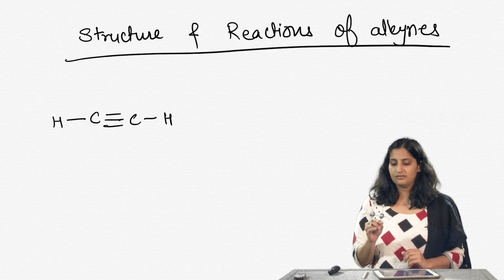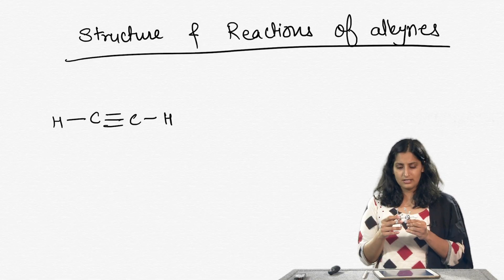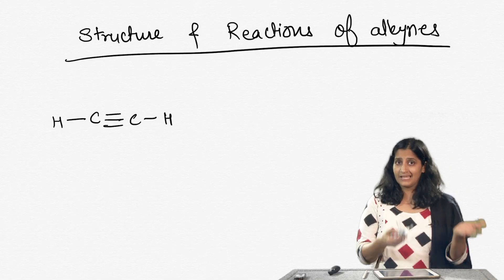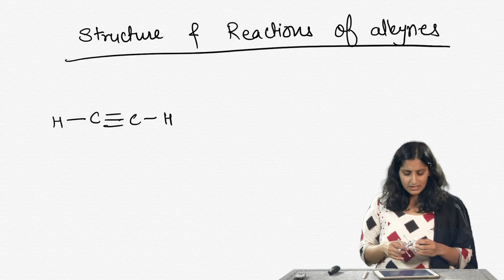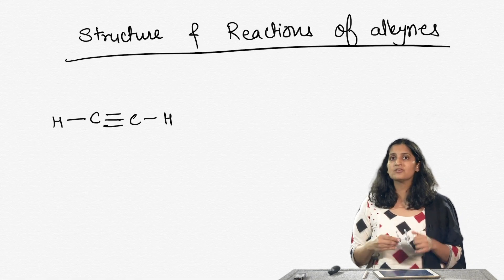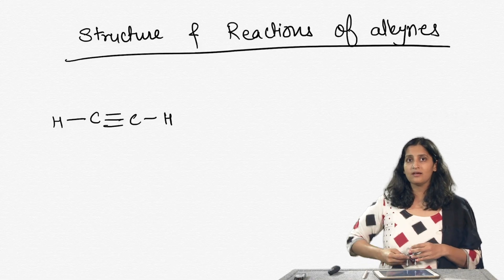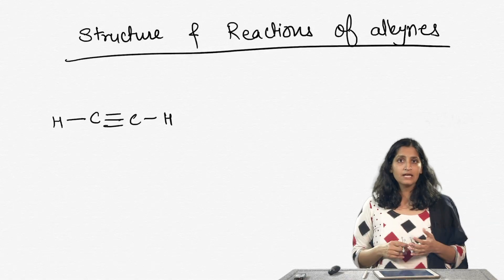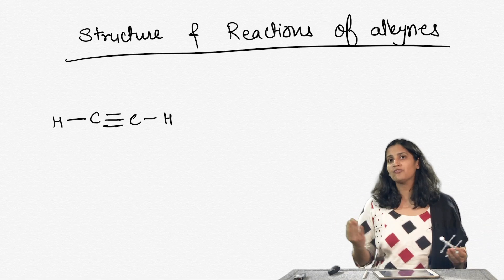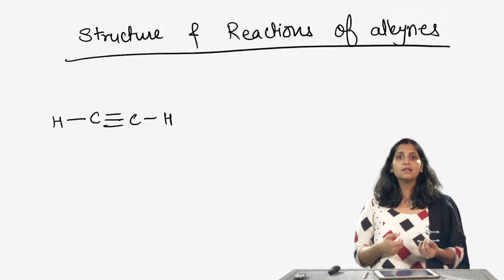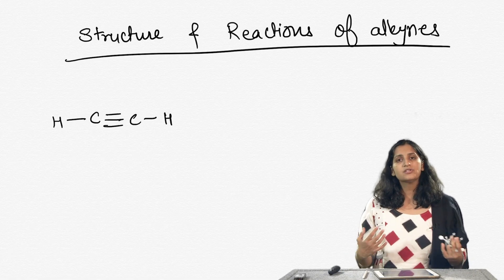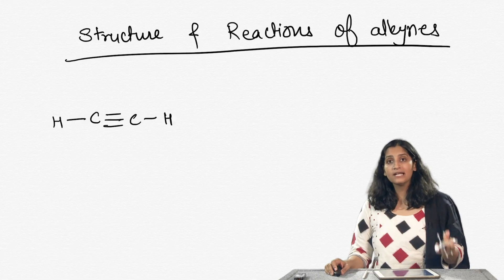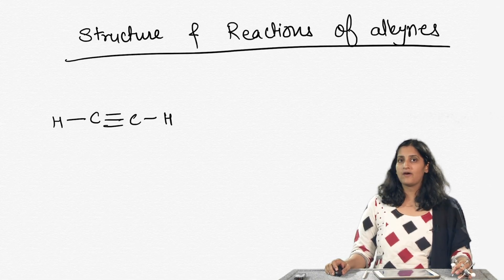Acetylene is one of the common names of the smallest alkyne, ethyne. You may be familiar with acetylene because of the oxyacetylene torch that is used in welding. Acetylene is supplied to the torch from one high pressure gas tank and oxygen is supplied from another — hence the name oxyacetylene. The burning acetylene produces a very high temperature flame which is capable of melting and vaporizing iron, so any time you see welding or melting of iron it is typically done with the help of an oxyacetylene flame.